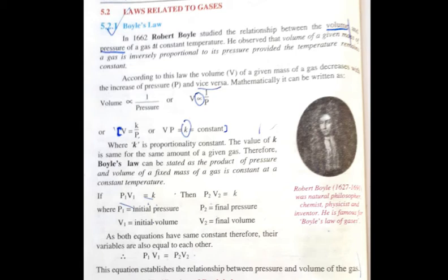We have made an equation and what is the equation? P1 V1 is equal to P2 V2. This equation describes the relationship between pressure and volume of the gas.